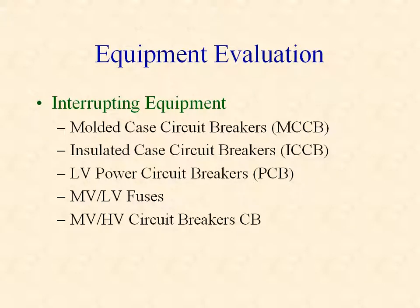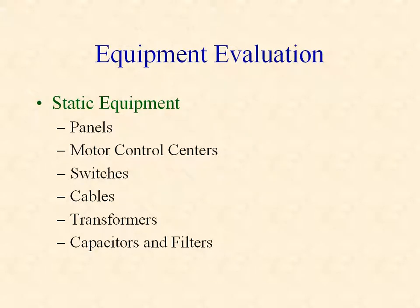Equipment evaluation checks molded case circuit breakers, insulated case circuit breakers, power circuit breakers, fuses, and medium and high voltage circuit breakers. It also checks continuous current ratings and short circuit ratings for panels and motor control centers, continuous current and voltage ratings for switches, capacitors, and filters, and continuous current ratings and voltage drop limits for cables, transformers, and reactors.